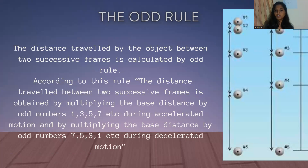Accelerated motion means when an object is in a still position and we apply force on it, it starts moving in uniform or non-uniform motion, which is called accelerated motion. Decelerated motion means when an object moves in the opposite direction of the force applied; that is called decelerated motion.